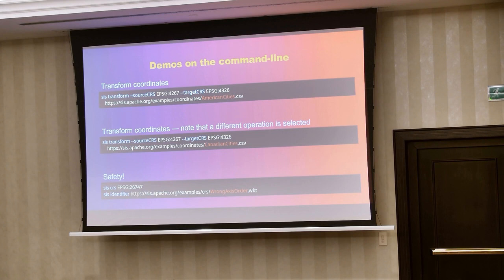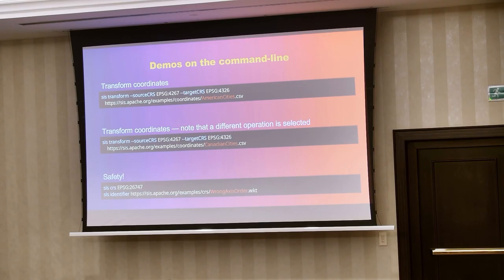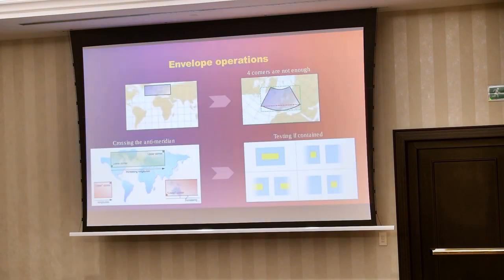The demo I was supposed to show demonstrated that Apache SIS can give you information about the accuracy of coordinate transformations. It was transforming the coordinates of a city while providing information like the domain of validity of the transformation, the accuracy, and also providing warnings such as 'be careful, you are using a deprecated CRS definition' or 'the axes do not seem quite right for the operation you are doing.'